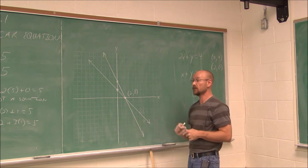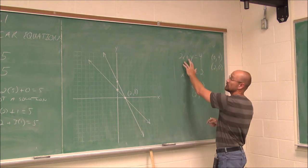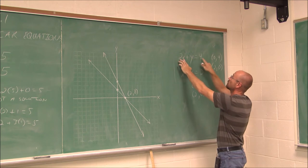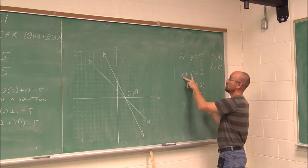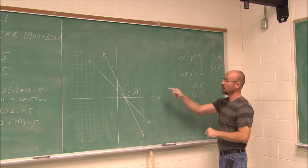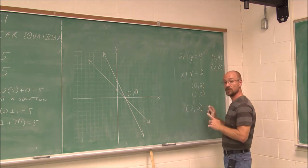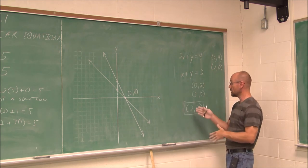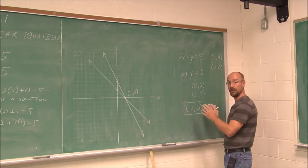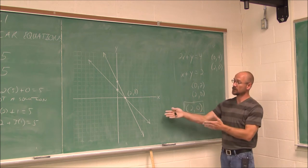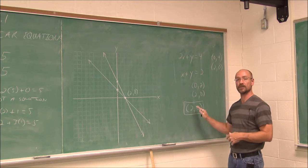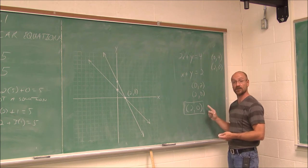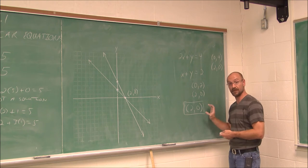How can we check our work? Just like we did in the previous example, we can plug it in. Is (2, 0) a solution? If x is 2 and y is 0: 2 times 2 is 4, plus 0 is 4 — that's true. And 2 plus 0 is 2 — that's true. So I know that my solution is the ordered pair (2, 0). Solutions have to be written as ordered pairs, because the intersection has an x and a y piece to it. When we find a system of equations that has a single solution, we call this a consistent system, because it will consistently intersect at this point and only this point.